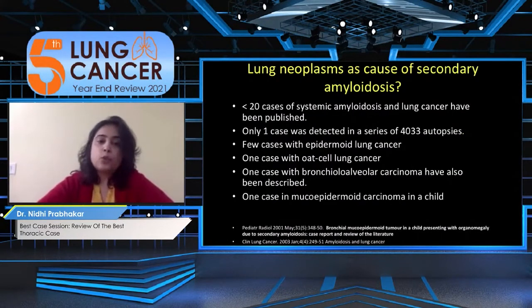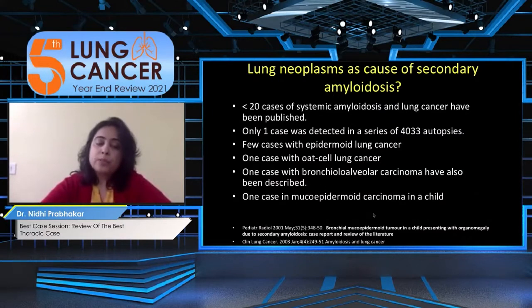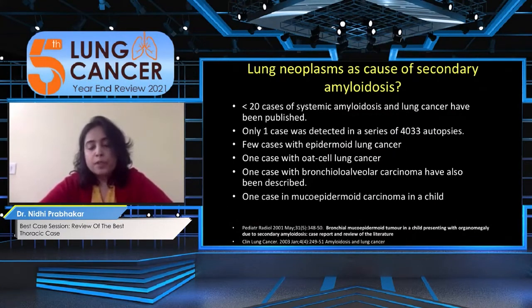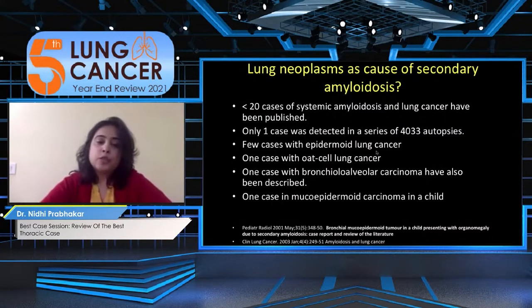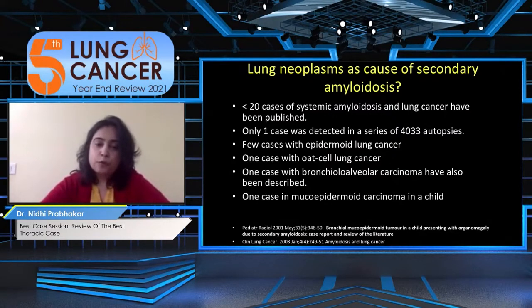The interesting finding was that this mucoepidermoid carcinoma led to secondary amyloidosis. A literature search found only one previously reported case, in Pediatric Radiology in 2001, where the authors were skeptical about causation. In our case, autopsy clearly showed mucoepidermoid carcinoma and diffuse deposition of amyloid proteins in all organs. Other lung cancers associated with amyloidosis include epidermoid lung cancer, oat cell lung cancer, and bronchial carcinomas. This is the second reported case of mucoepidermoid carcinoma leading to secondary amyloidosis.